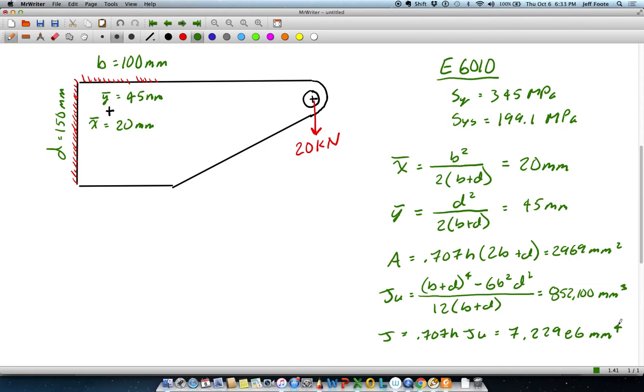So those are all the section properties we need, and we can go ahead and calculate the offset moment for this as well. What we're going to do is transfer that 20 kilonewton load to the centroid location, which is going to carry the force directly over, and the moment is actually the distance from the edge of the plate to the load is given in the problem statement is 300 millimeters, and we're coming back by X bar or 20 millimeters. So this actual offset distance here comes out to be 280 millimeters.